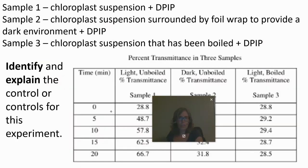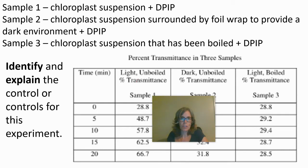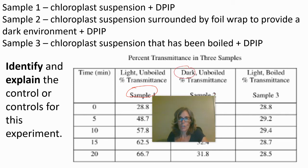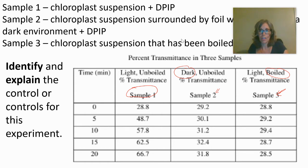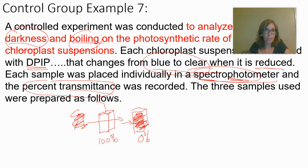Three samples were used: Sample 1 is chloroplast suspension plus DPIP; Sample 2 is chloroplast suspension wrapped in foil to create a dark environment; Sample 3 is boiled chloroplast suspension. The question asks you to identify and explain the control. The scientists were studying the effects of darkness and the effects of boiling on photosynthesis.